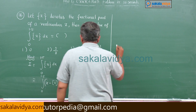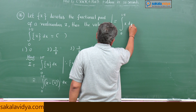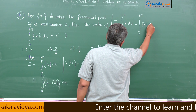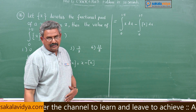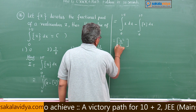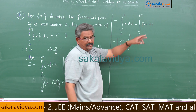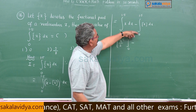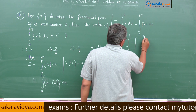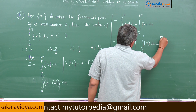We write I = integral from 0 to 1.5 of (x - [x]) dx. Separating the two integrals: integral from 0 to 1.5 of x dx minus integral from 0 to 1.5 of [x] dx. The second integral should be integrated piecewise: 0 to 1 and 1 to 1.5. So we write integral 0 to 1 of [x] dx plus integral 1 to 1.5 of [x] dx.